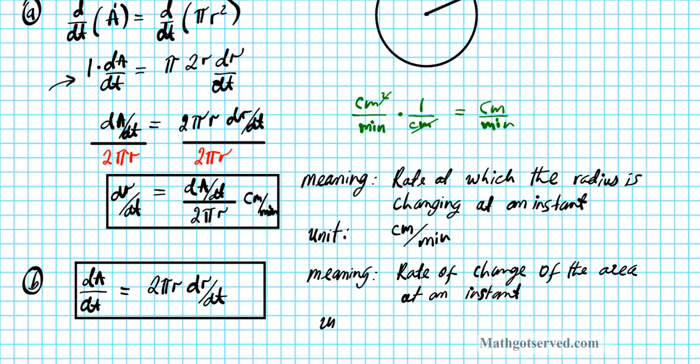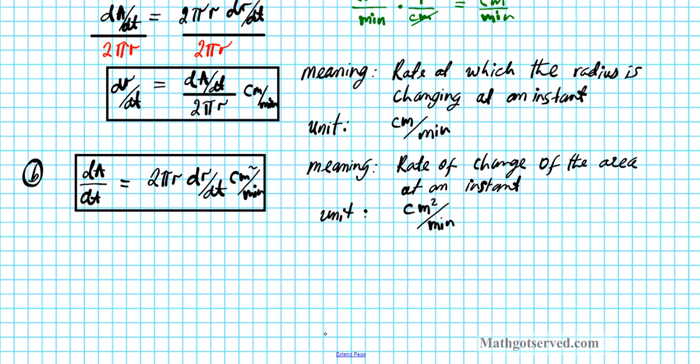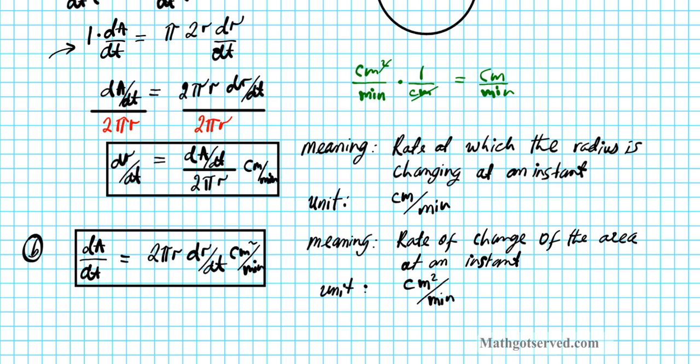And the unit is going to be area per time. The dimension of area is units length squared, so centimeters squared per, the unit of time here is minutes. So it's going to be 2 pi r dr/dt centimeters squared per minute. So that's your final answer for part b.